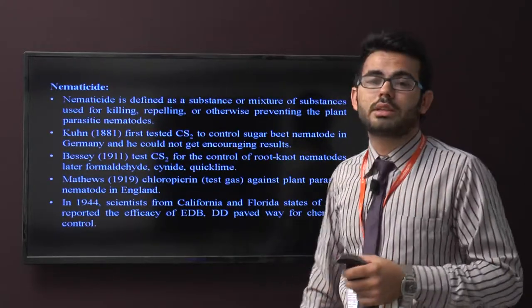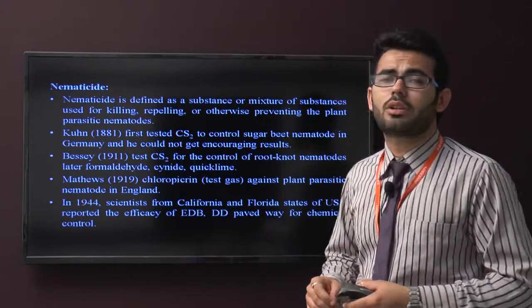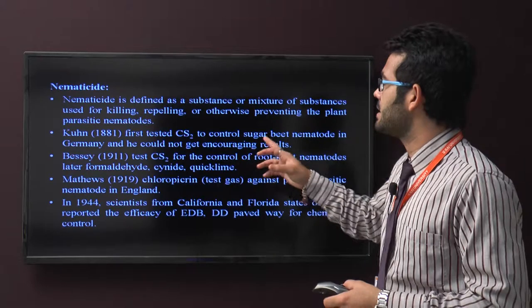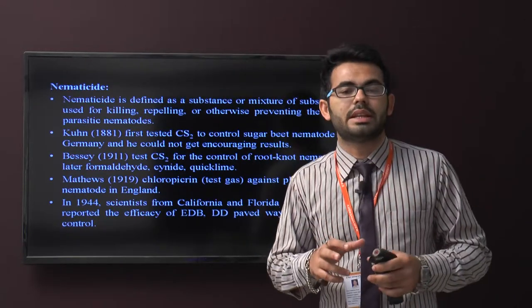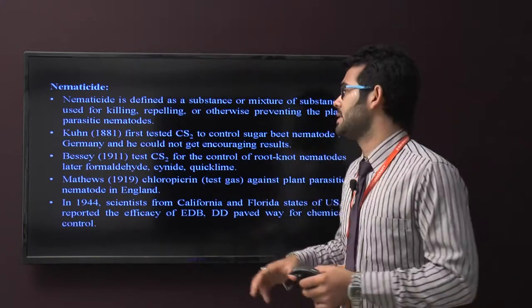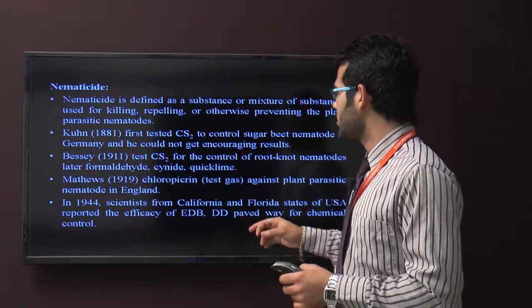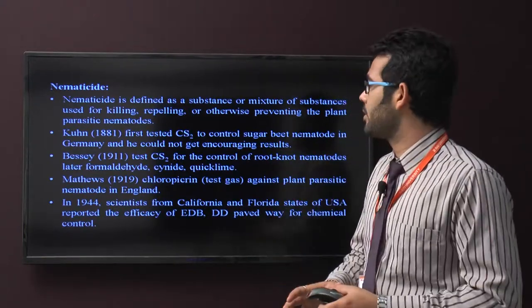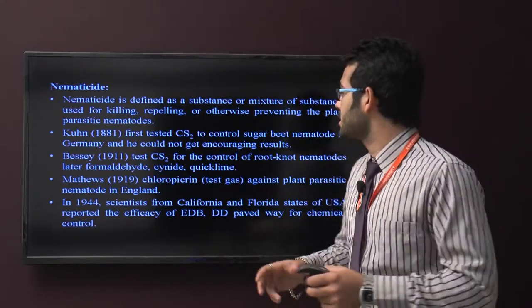Use of nematicides for controlling nematodes. Nematicide is defined as a substance or mixture of substances used for killing, repelling, or otherwise preventing plant parasitic nematodes. Kuhn in 1881 first tested carbon disulfide CS2 to control sugar beet nematodes in Germany but could not get encouraging results.